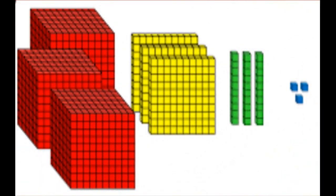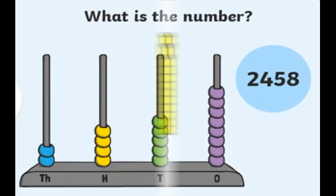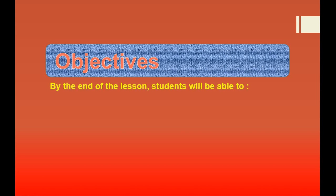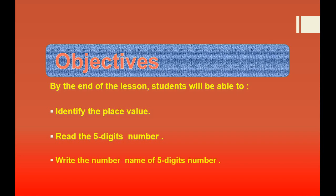Dear students, we have already learnt about the four-digit number — ones, tens, hundreds, and thousands. You can read this number with the help of the abacus. In the ones column there are 8 beads, in the tens column there are 5 beads, in the hundreds column there are 4 beads, and in the thousands column there are 2 beads. So we can read the number: that is 2,458. Today we will discuss the same process but a little bit longer. The objectives of today's lesson are: by the end of the lesson, students will be able to identify the place value, read the 5-digit number, and write the number name of a 5-digit number.